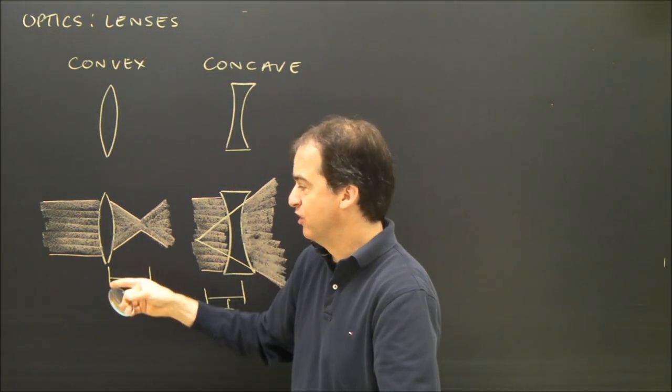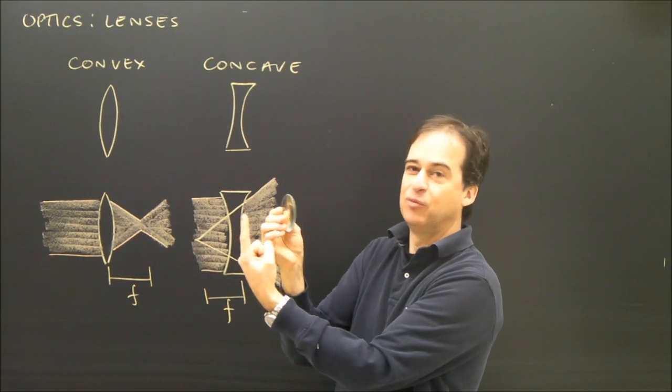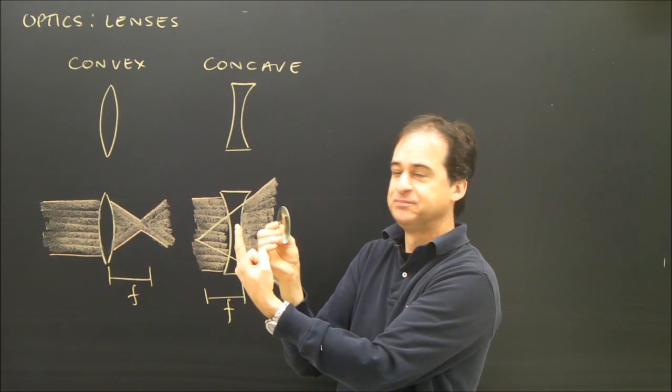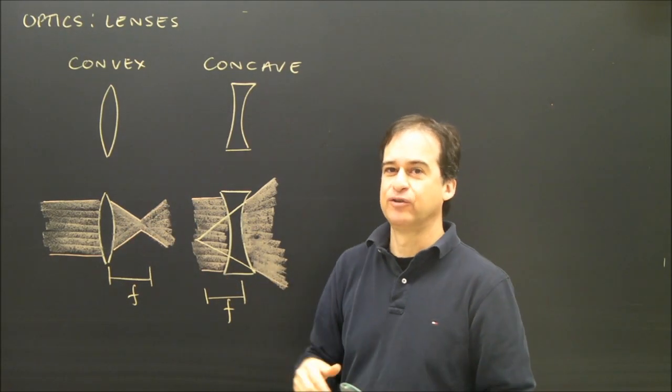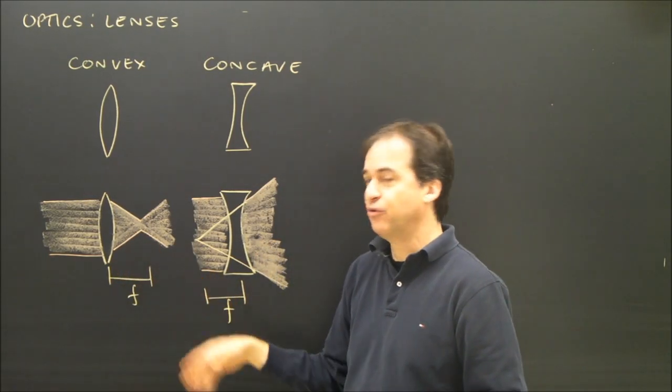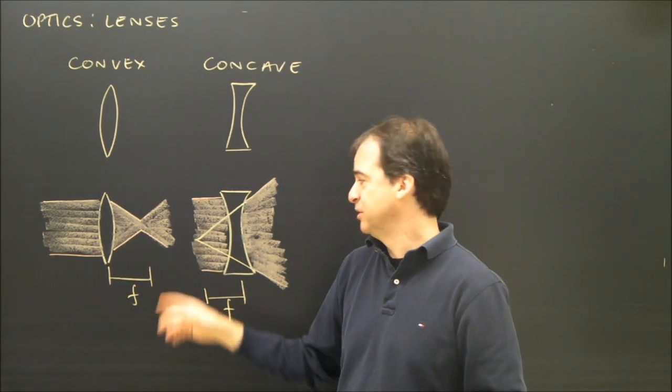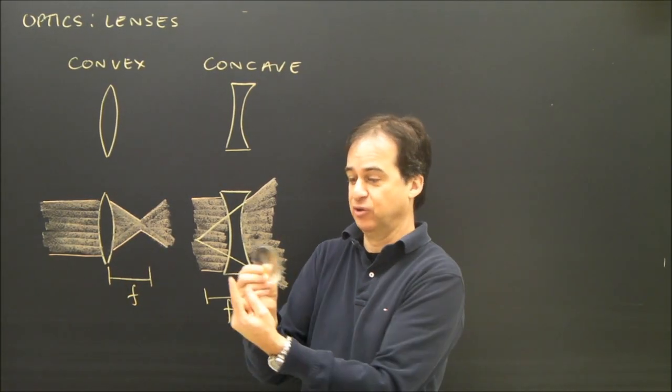If something is closer than the focal length, the focal length is here, and I put my finger here, it will give me a virtual image. So a convex lens can create a real and a virtual image. It depends on where the object is. If the object is further than the focal length, it's going to be a real image. If the object is closer than the focal length, it's going to be virtual and I look through the lens.